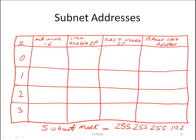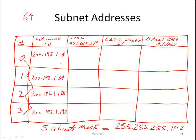Between each subnet we have a distance of exactly 64. Our first network ID is 192.1.0.0, and the next network IDs are 192.1.0.64, 192.1.0.128, and 192.1.0.192. The first usable IP is always the network ID plus 1: so .1, .65, .129, and .193 respectively. The broadcast address is one less than the network ID of the next subnet: .63, .127, .191, and .255.